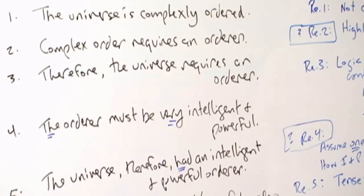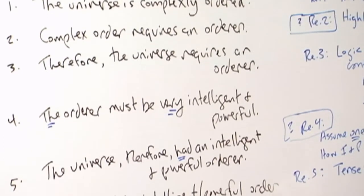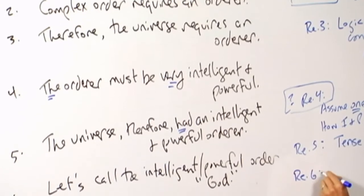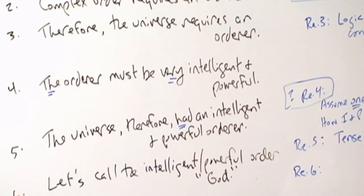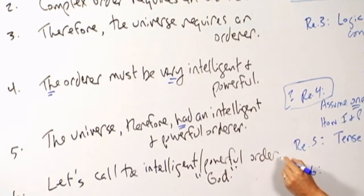All right, moving on then to number seven, or sorry, number six, getting ahead of myself. Let's call the intelligent and powerful orderer, correct my spelling here, God.